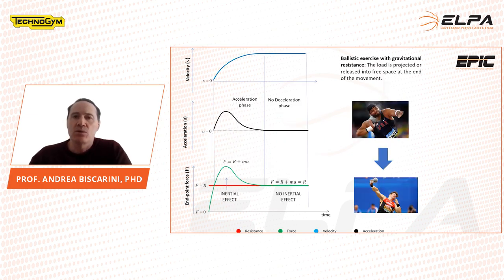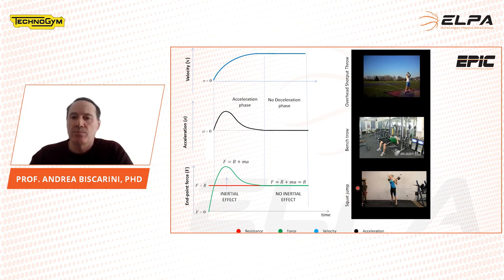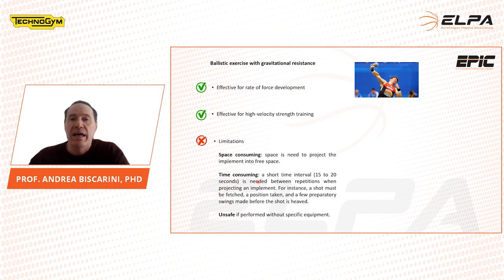With ballistic exercises with gravitational resistance, we have the benefit of inertia at the beginning of the movement, but we also avoid the final deceleration phase because the load is released into free space at the end of the movement. This is what happens, for example, with overhead shot-put throw, bench throw, and squat jump. In this case, the training stimulus is effective for both rate of force development and high velocity strength. However, these exercises are space consuming, time consuming, and may be unsafe if performed without specific equipment.